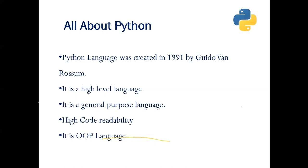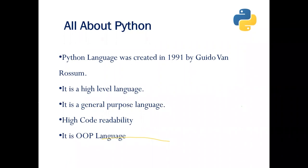Writing seven to eight lines for a simple task is a lot, and it's not very readable. For example, a person who doesn't have any technical background or doesn't know coding — if they look at such code, they won't be able to understand what it's doing. Guido van Rossum had in his mind that he wanted to build a language that was so simple and readable that everyone could do coding.